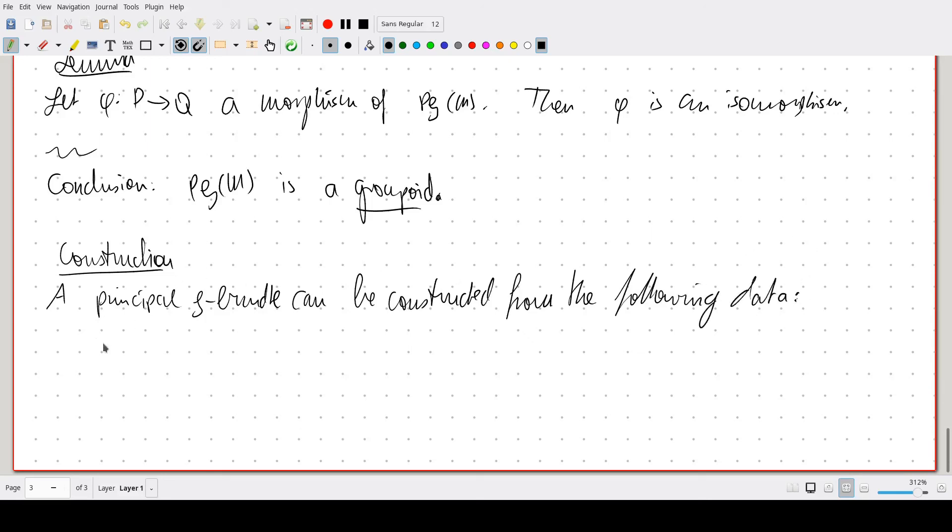A cover Ui and smooth maps phi ij from Ui intersected with Uj to G, subject again to the cocycle condition we have encountered for vector bundles. So, phi ii at every point is the neutral element of G.